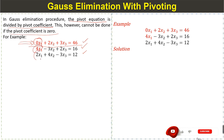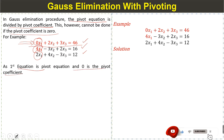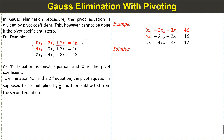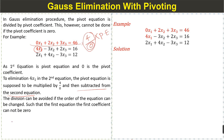Since the first equation is the pivot equation and 0 is the pivot coefficient, to eliminate terms in the second equation, we would multiply the pivot equation by 4 and divide by 0 — which is undefined. The pivot coefficient appears in the denominator, so division by zero must be avoided. This can be resolved if the order of the equations is changed.